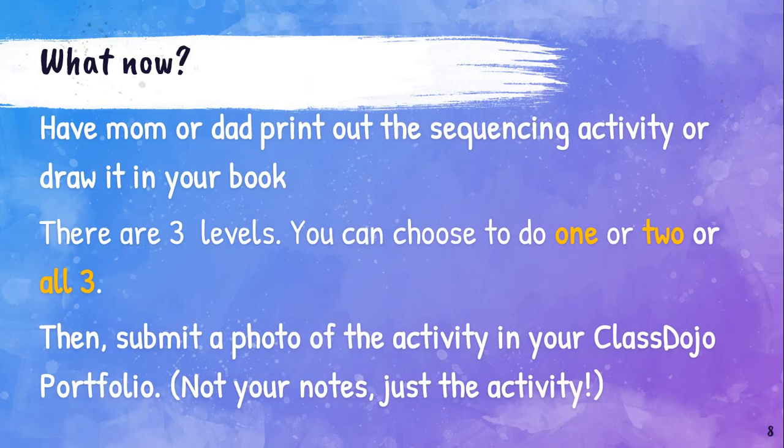What you do have to do today is have mom or dad print out the sequencing activity, or you can draw it in your book. There are three levels. You can choose to do one, two, or all three, but you need to do at least one. You just choose which one you want to do. Then you're going to send in a picture of your activity to your Class Dojo portfolio. The notes are just for you — I only need to see the activity.